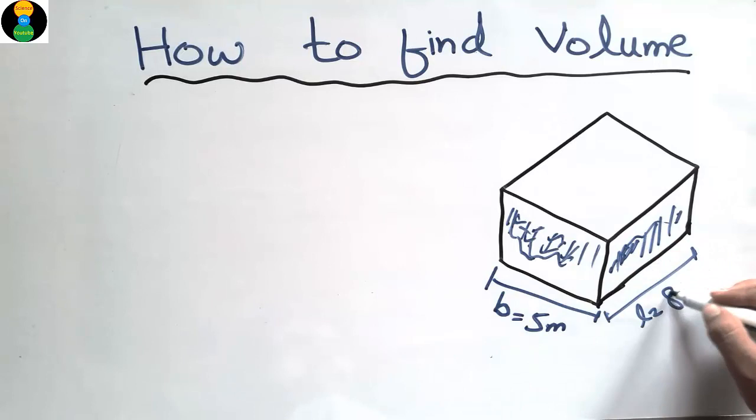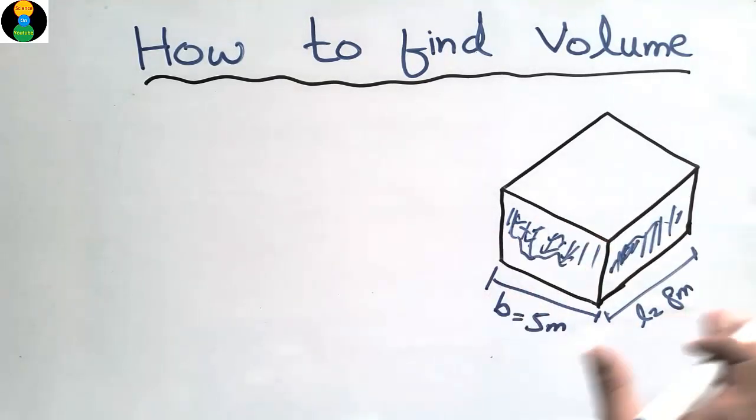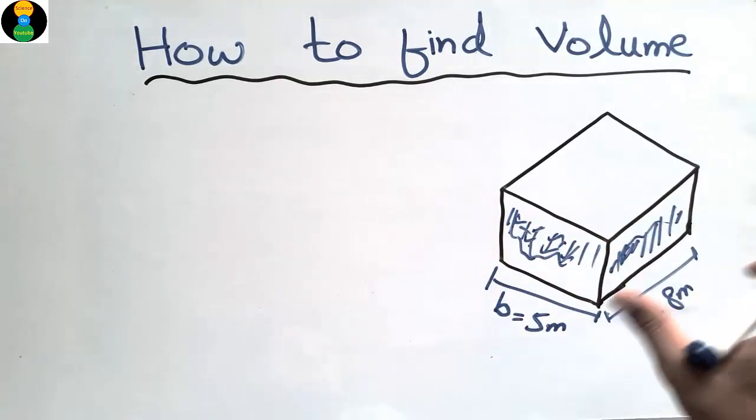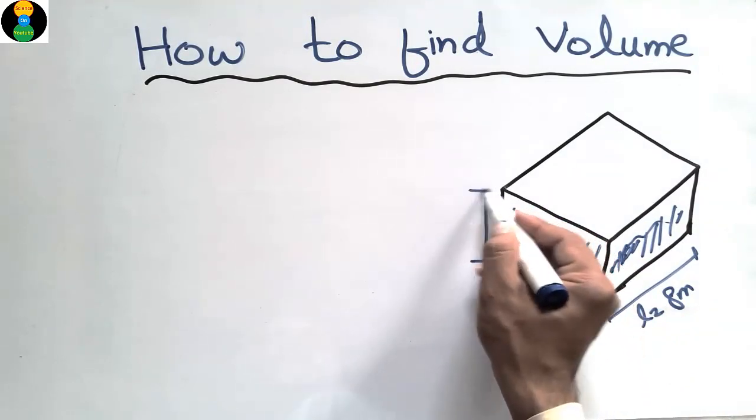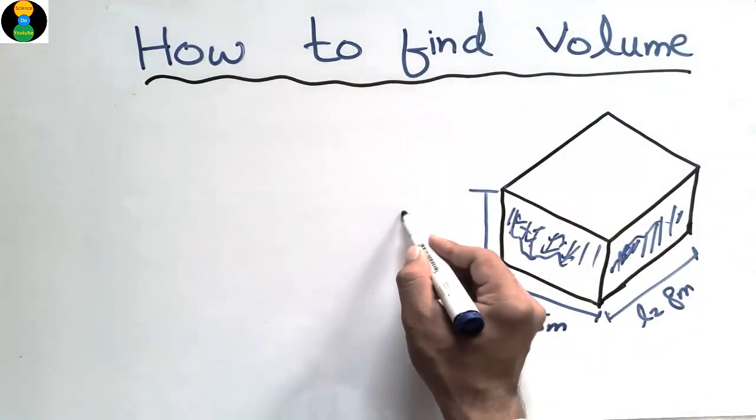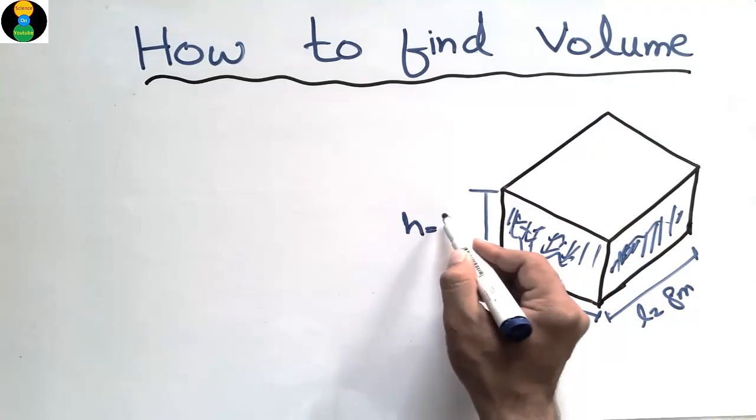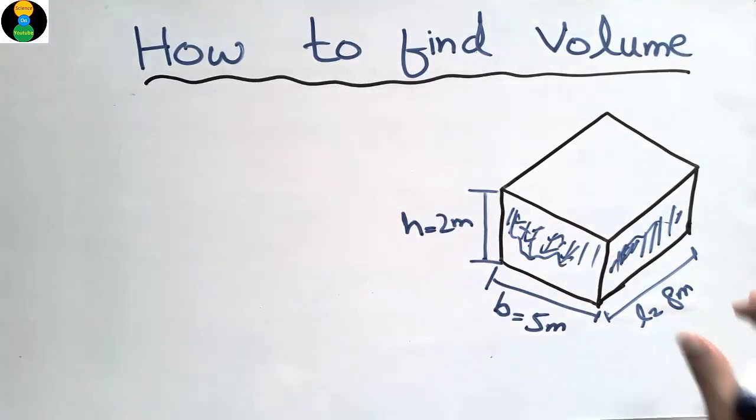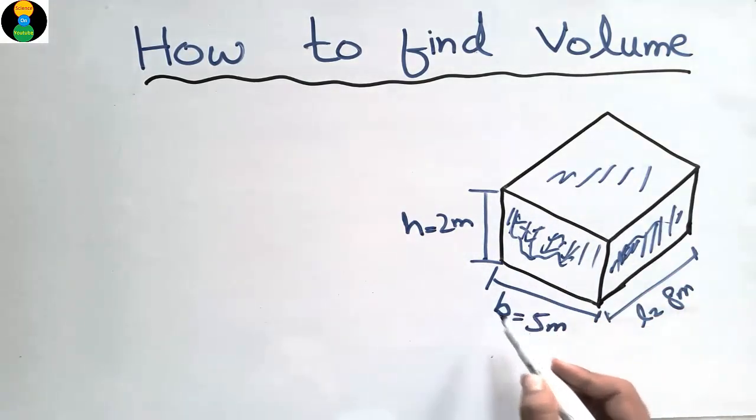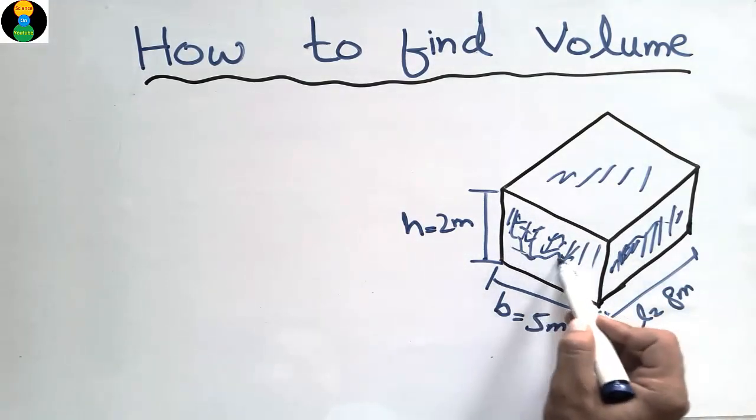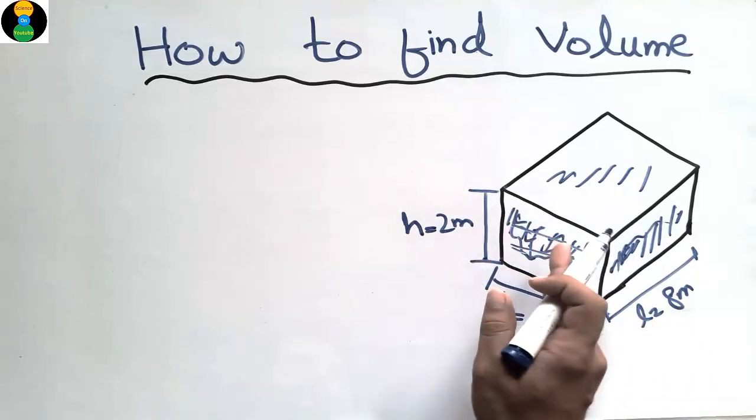Consider the depth of this object is depth, we can represent it by H, it's equal to 2 meters. So this is a three-dimension object in which the three different dimensions are given: the depth, the width, and the length in this direction, and the depth in the height.